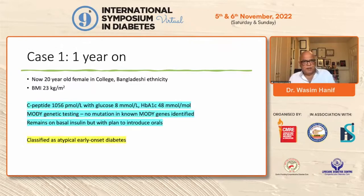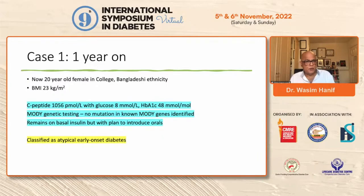We checked her C-peptide levels — they came back elevated at 1,056 picomoles per litre. Concurrently, her glucose at that time was 8 mmol/L and her HbA1c was 48 mmol/mol. We also did MODY genetic testing, and no mutation in any MODY genes was identified. She currently remains on basal insulin, but the plan is to introduce oral agents. This is classified as atypical early-onset diabetes that we are seeing more and more in South Asian or Asian Indian populations.